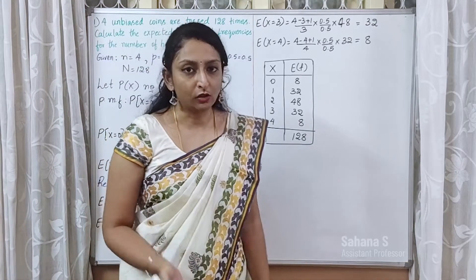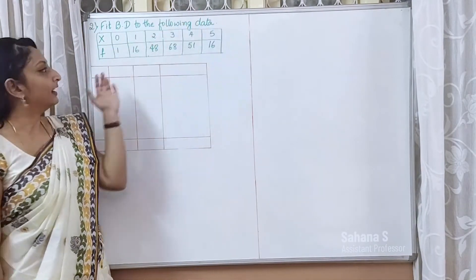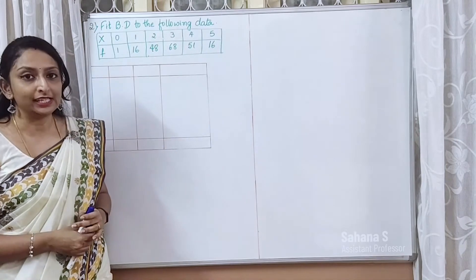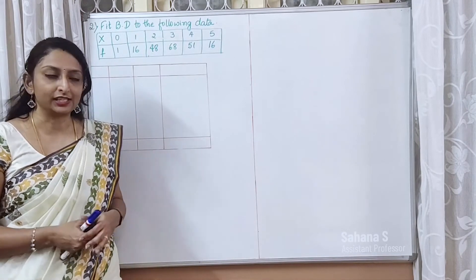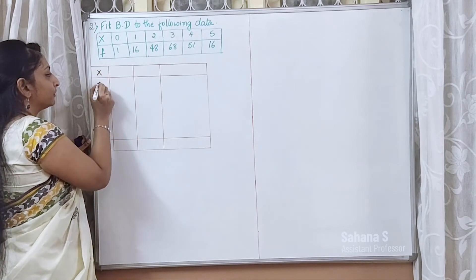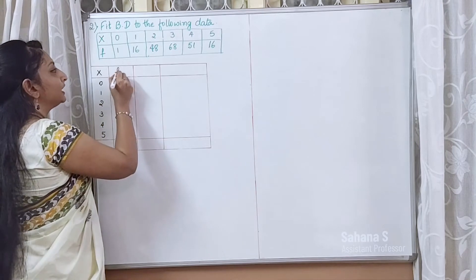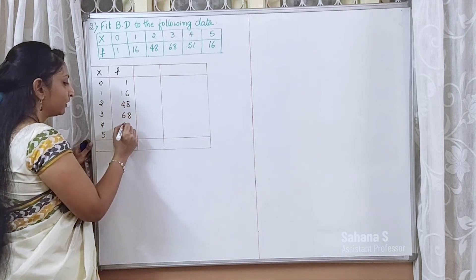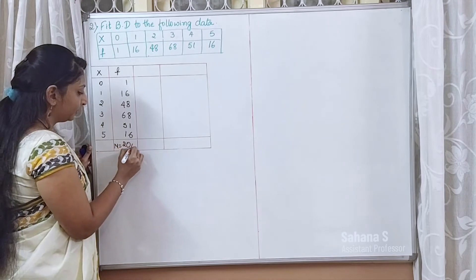Now we move to the second problem: fit a binomial distribution to the following data. The x values are 0, 1, 2, 3, 4, 5 and the corresponding observed frequencies are 1, 16, 48, 68, 51, and 16. The total is 200, so capital N = 200.